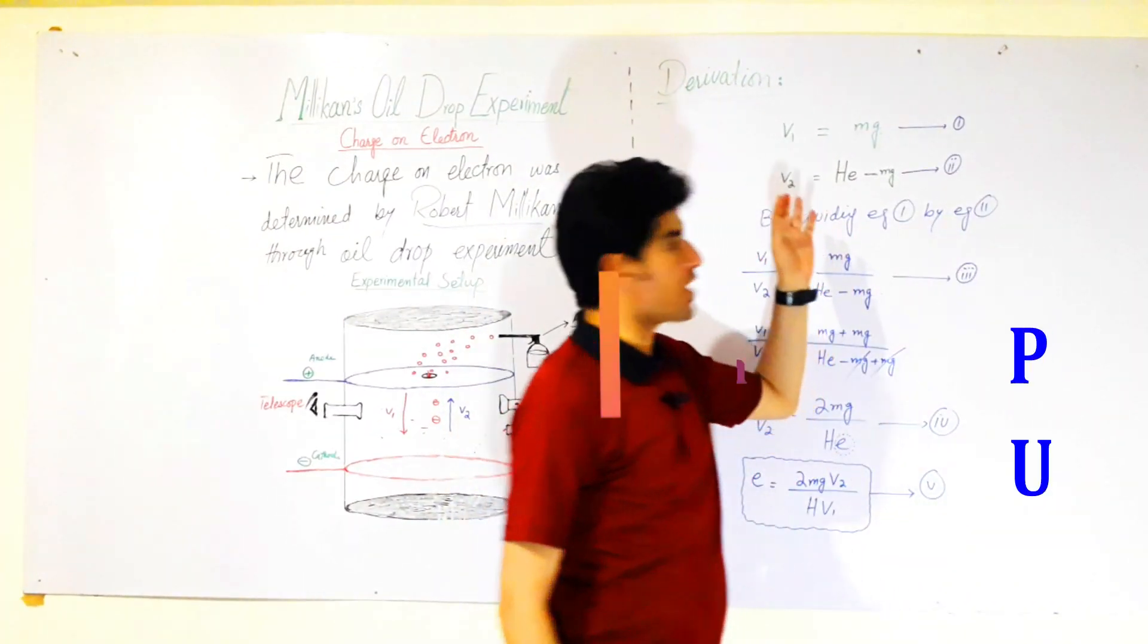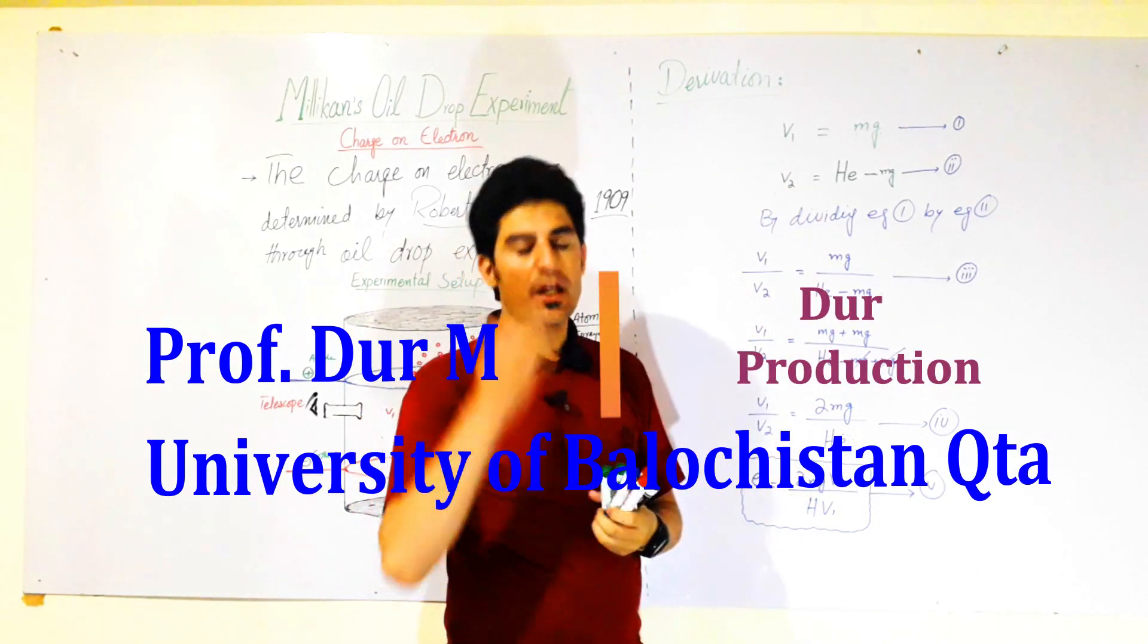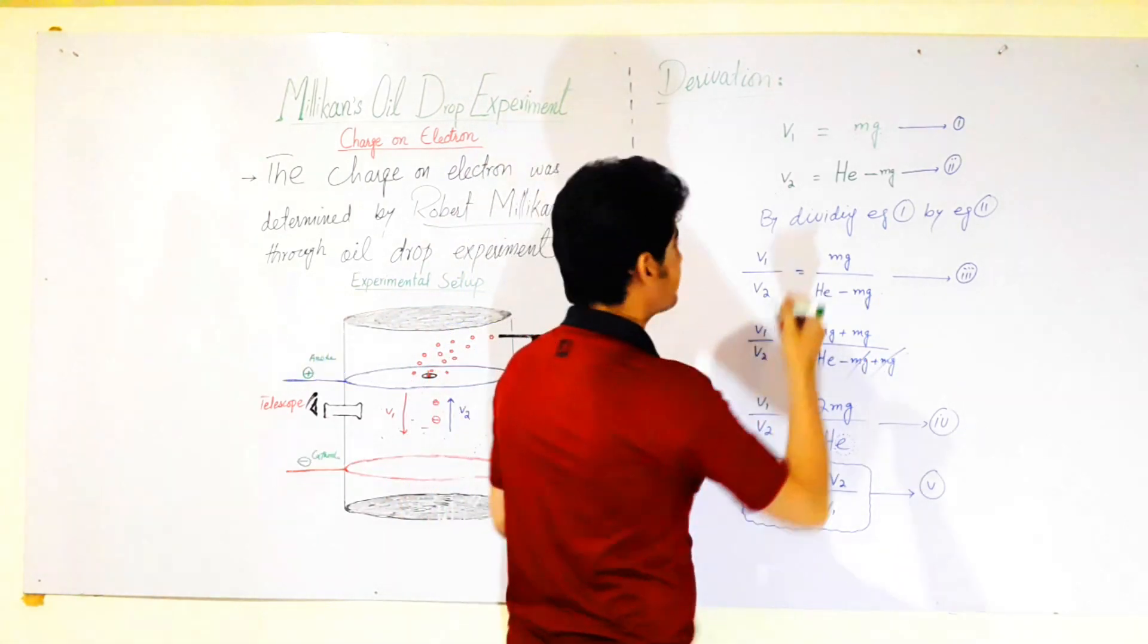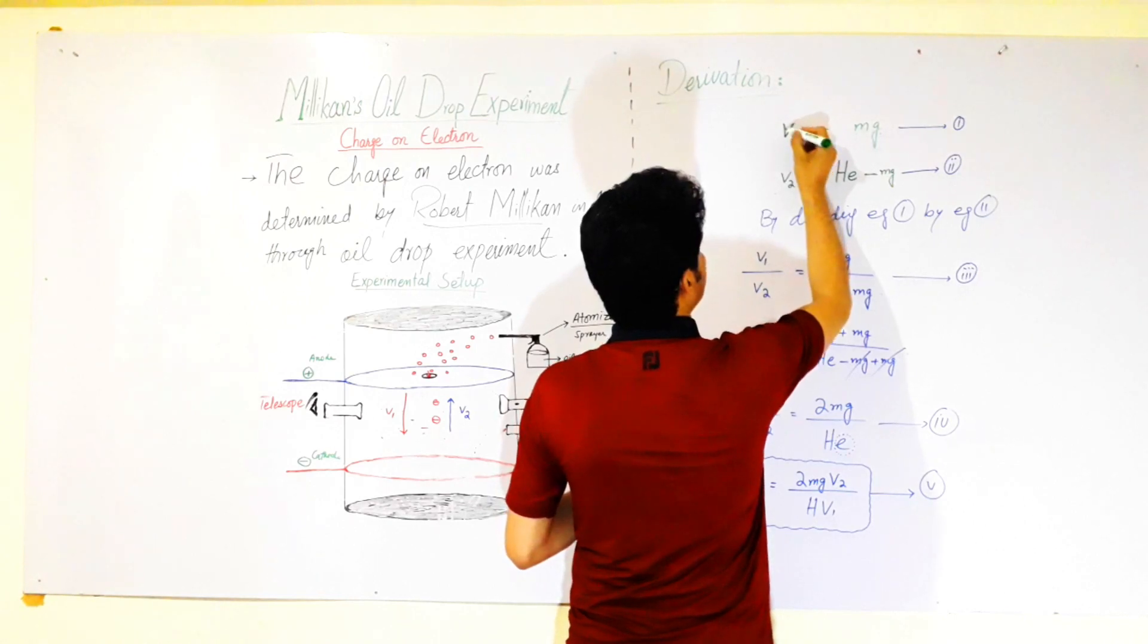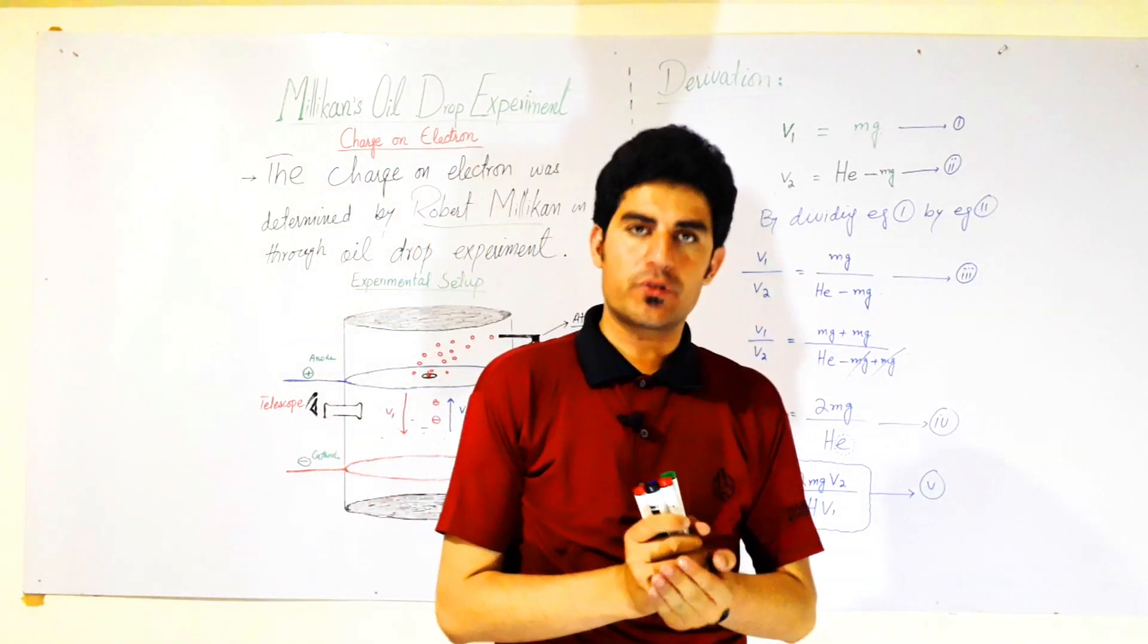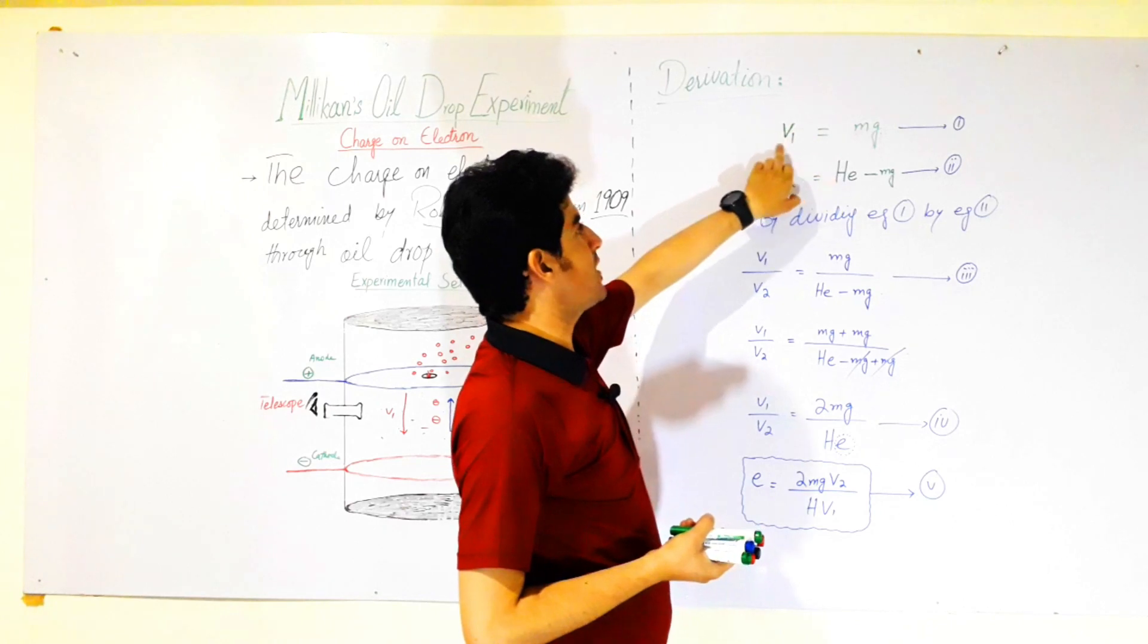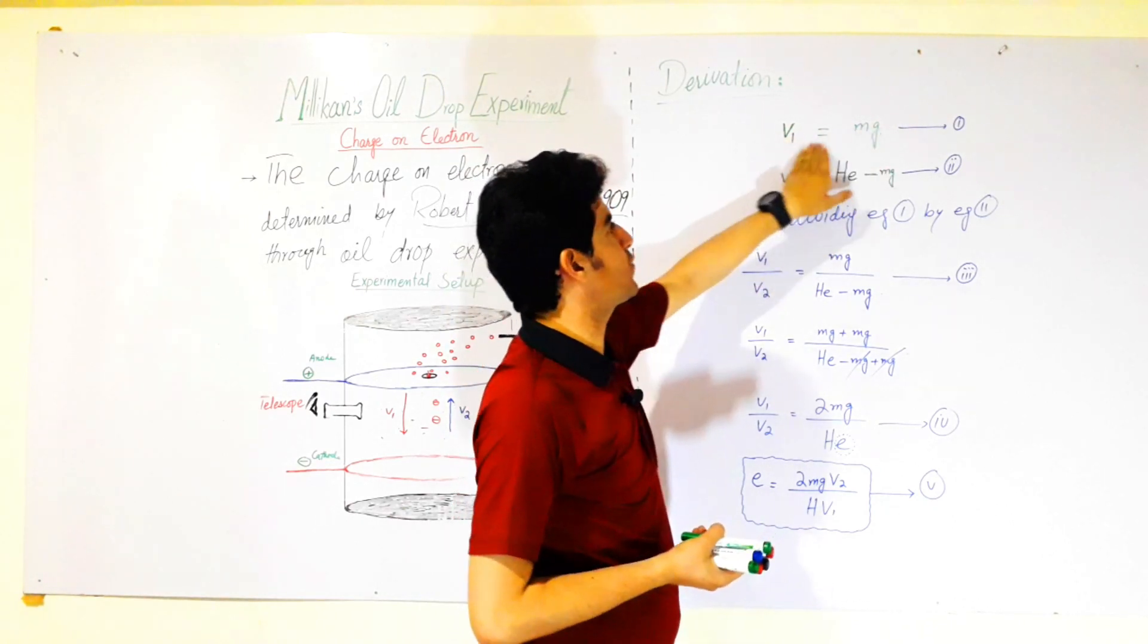Now we have the derivation to calculate the charge of an electron, a mathematical derivation. We have v1, velocity 1, that was just because of the gravitational force. So we can say that v1 is equal to mg, mass into gravity.